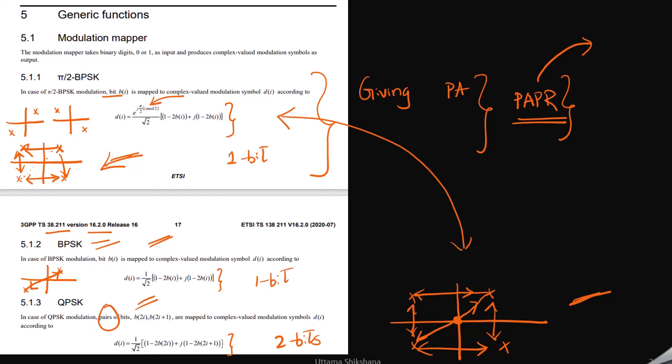PAPR effects or problems are mainly in the uplink direction, so this π/2 BPSK modulation scheme is basically used in uplink, whereas BPSK and QPSK are used in both uplink as well as downlink.